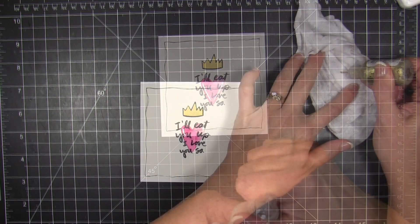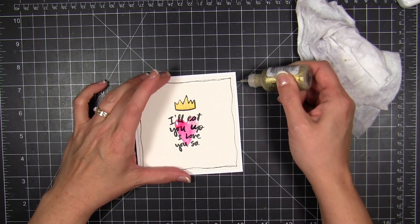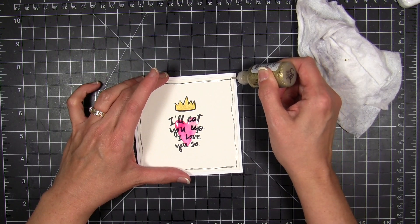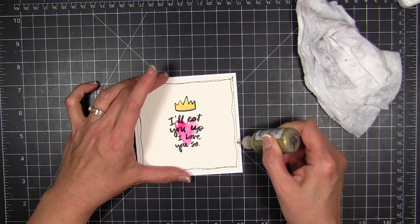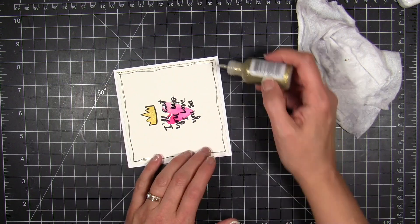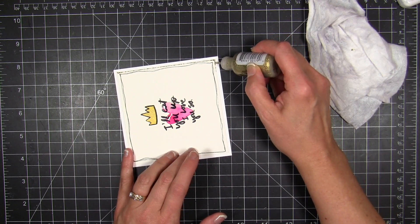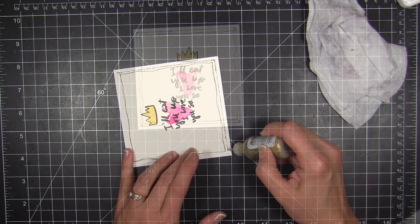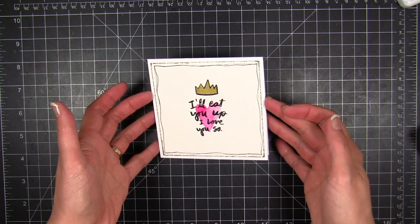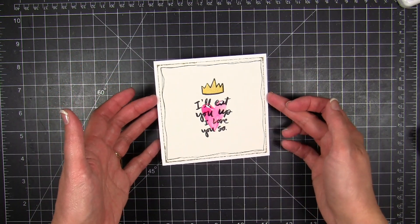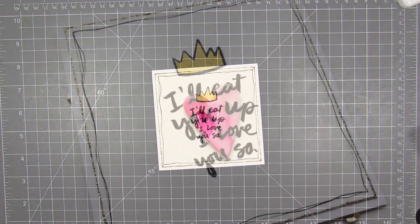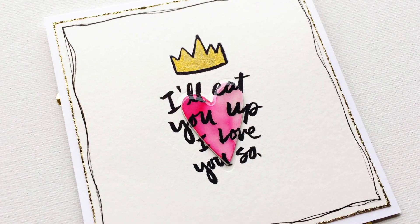For one last finishing touch, I'm gonna take some gold Stickles and angle that and butt it up right against the edge of that watercolor panel. Because it's flush-mounted to the card front, I can just run the tip of that nozzle of the glitter glue right against it and get a nice fine bead of glitter glue all the way around the edges, and it just finishes off the card perfectly.